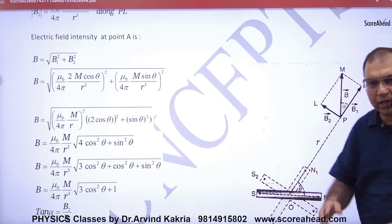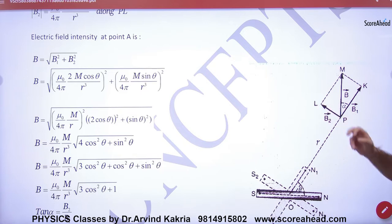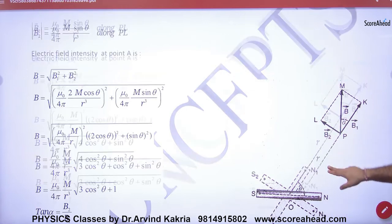We had to draw the same diagram. Remember it was B-axial, it was B-equatorial. And what was the net answer? Square root of B-axial and B-equatorial. The same.